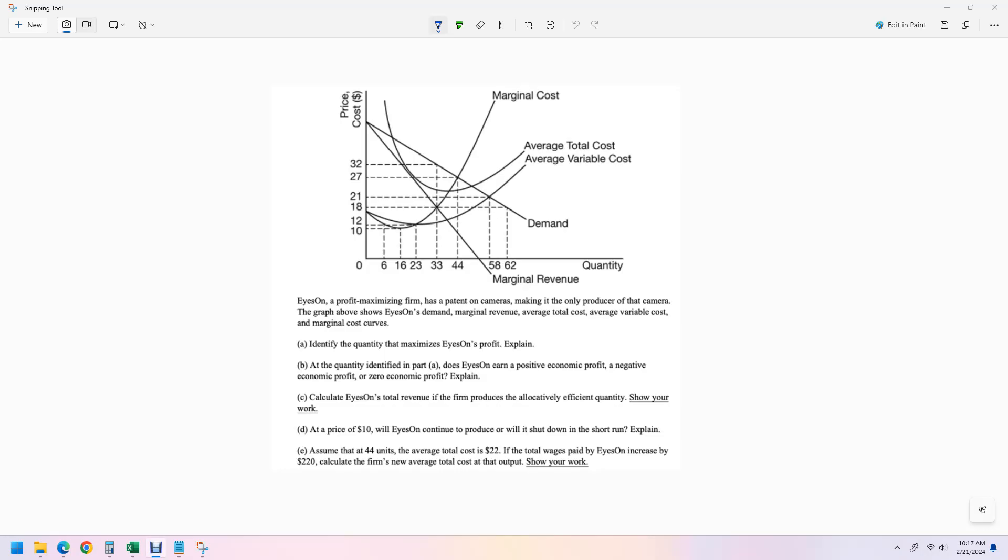Well, out there to you. In this AP micro practice problem, we've got a monopoly. The company's called Eyes On. We've been given their demand curve, marginal revenue, marginal cost, average total cost, and average variable cost. If you want to use this as practice, you can pause the video before I go over the answers and see if you're right. That's a good way to practice everything you're working on.